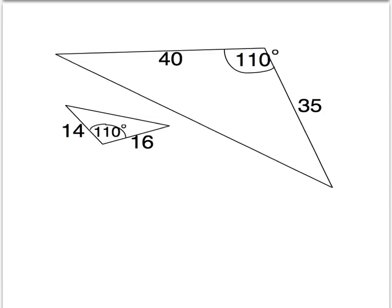Here's another example. We want to see if these two triangles are similar. We know that these two angles are congruent — 110 is congruent to 110. And then we also have two pairs of sides. So we're going to check using the SAS similarity theorem. We already know we have the included angles, which are congruent. So now our job is to see whether the sides are proportional.